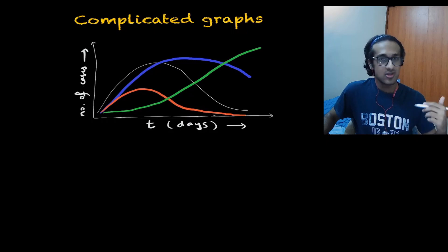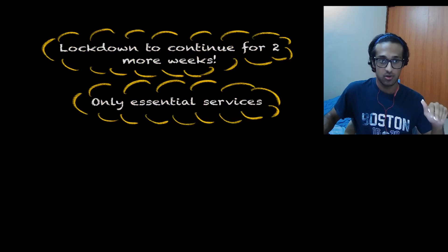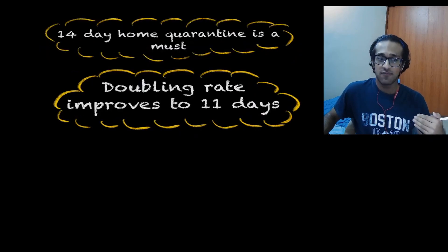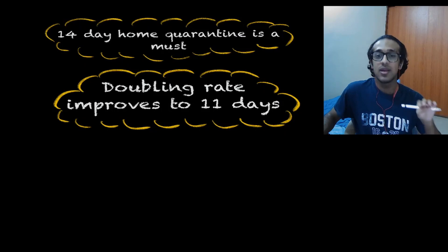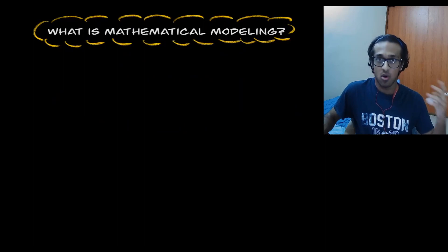All the policy decisions that have been made during the COVID-19 pandemic have in fact been based on mathematical models and those graphs. Policies like lockdown to continue for two months, only essential services being allowed and the elderly staying at home, and many more policies like 14 day quarantine being a must and the doubling rate which is improving to 11 days and now 23 days and so on. All of these policies and conclusions were drawn from mathematical models and the graphs that accompany them.